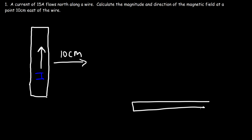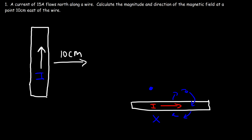Whenever you have a straight wire, to determine the direction of the magnetic field around that wire, take your right hand and curl your fingers around the wire, making sure the current aligns with the direction of your thumb. If we have a current going in this direction and you curl your fingers with your thumb pointing to the right, your fingers flow in that general direction. Above the wire, the magnetic field is coming out of the page; below the wire, it's going into the page.